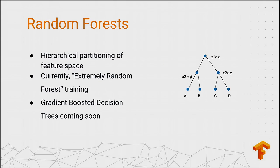We also have random forests and decision trees. Decision trees work by creating a hierarchical partitioning of the feature space. Currently our training method is what we call extremely random forest training, which allows better parallelization and scaling. We're also working on gradient boosted decision trees, which are very popular as well.